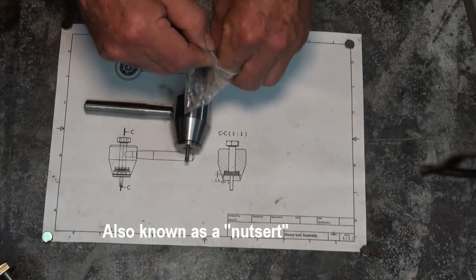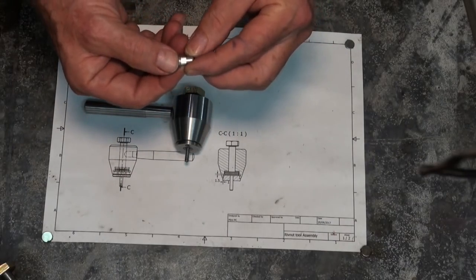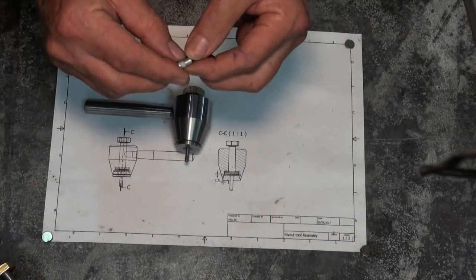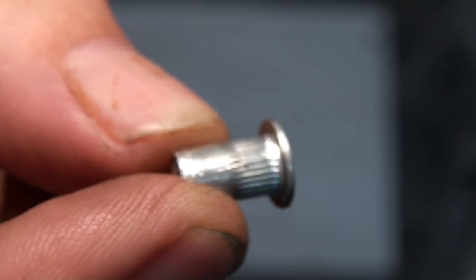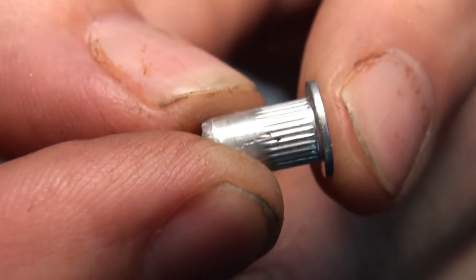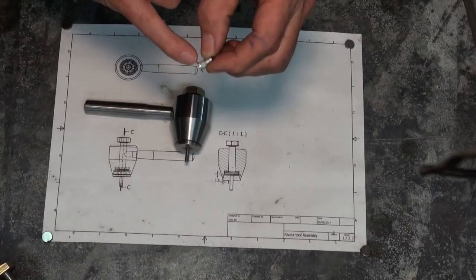Also sometimes called nut certs. They come in a range of materials, aluminum, stainless steel, I think also in monel metal. And they have the threaded portion inside the narrow end, a flange on top. And there's a knurled section which is designed to grip into the material that you're fitting it into.